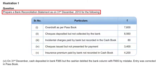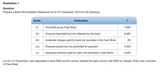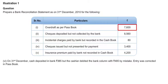First question: prepare a bank reconciliation statement on 31st December 2010 for the following. They have given us the passbook overdraft balance of 7600, then the reconciliation items. So we are supposed to prepare the BRS on 31st December 2010.